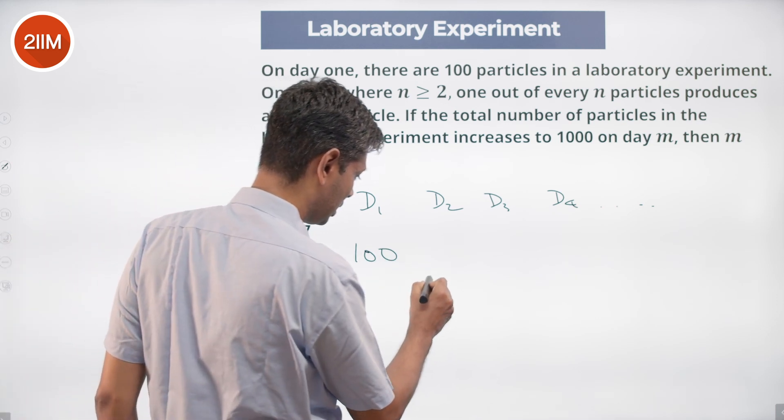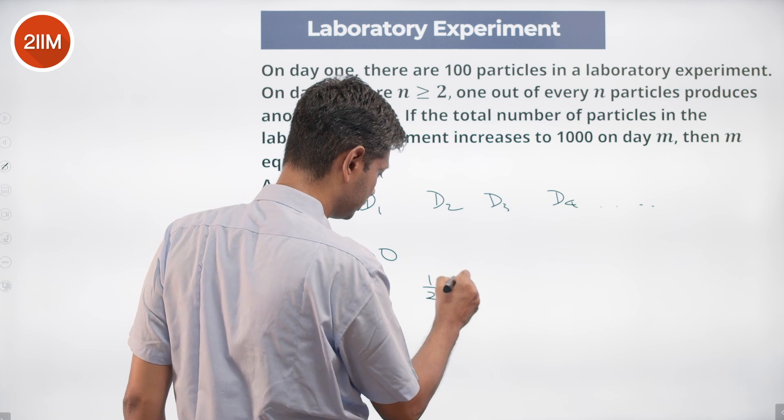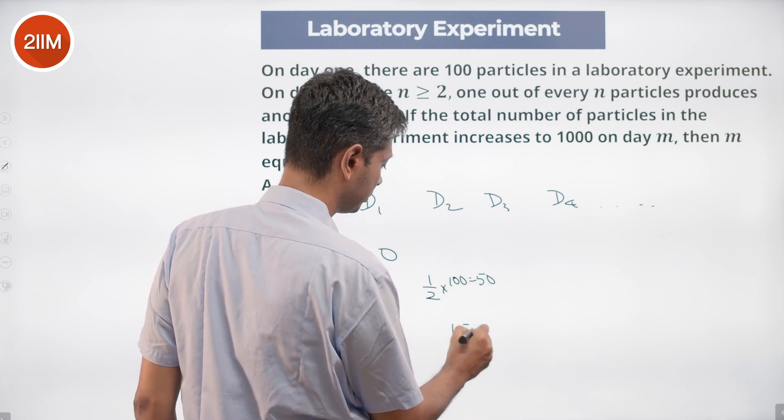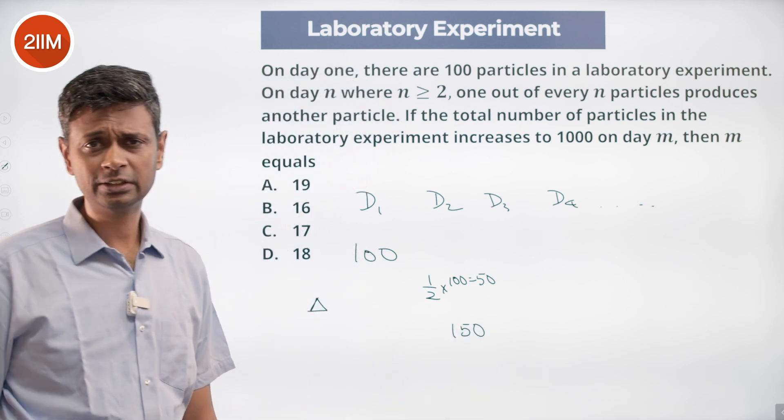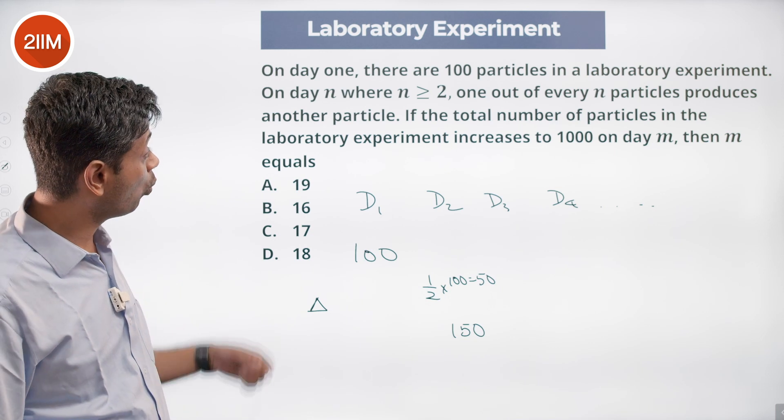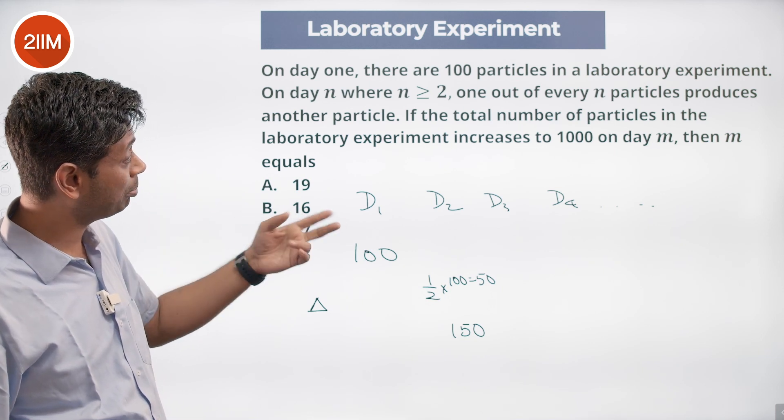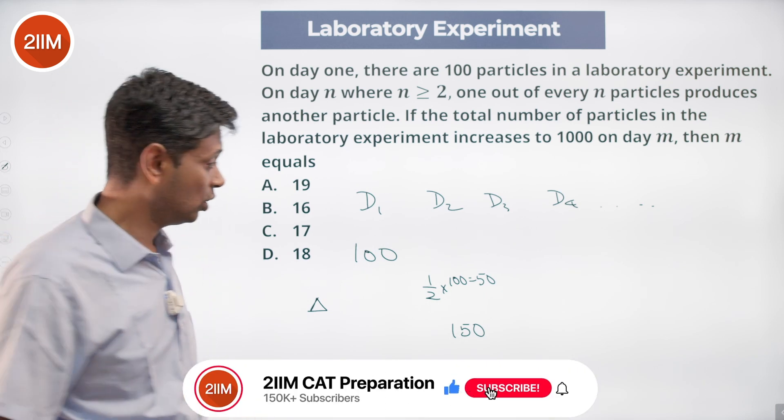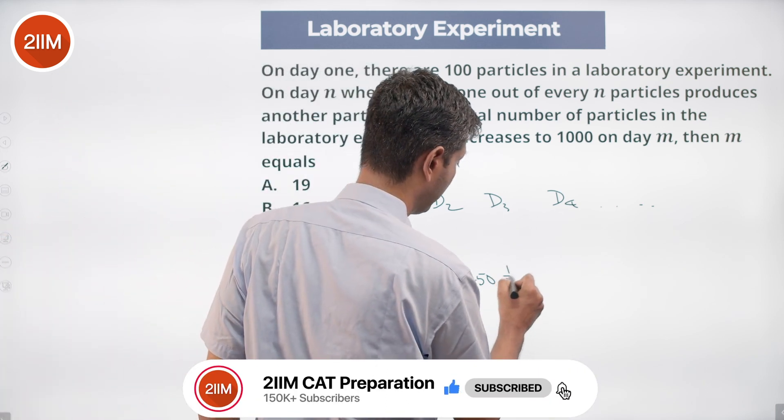What happens on day three? We have one by n, and n is three. One third of particles get added. What gets added? One third of 150, which is 50. This becomes 200.